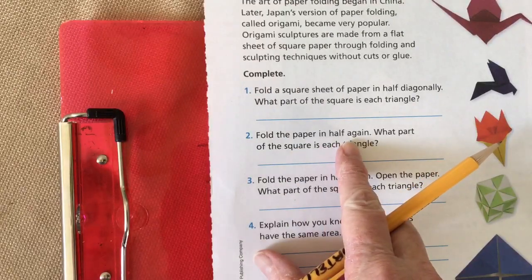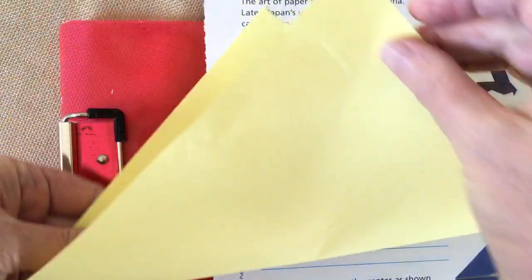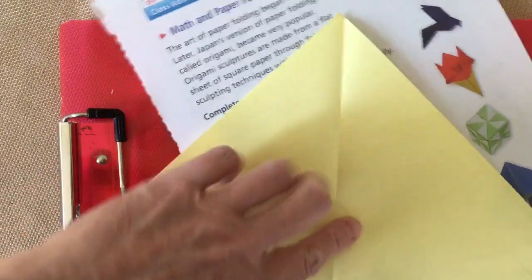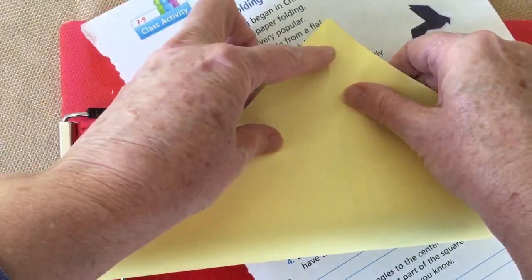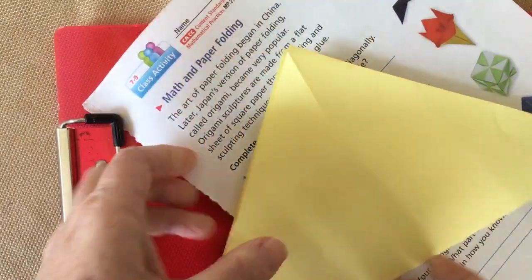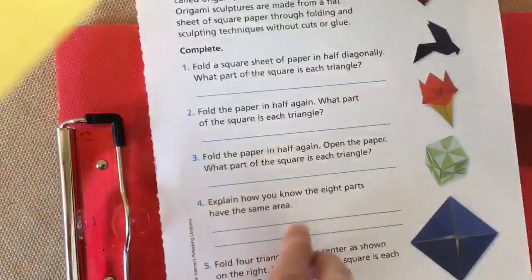The next thing says to fold the paper in half again. So now that I folded it this way, I'm going to open it up and fold it the opposite way now.